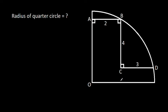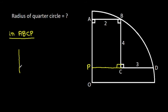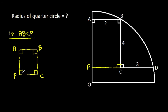If we extend CD, suppose this point is P, then this angle will be 90 degrees. Now, in quadrilateral ABCP, points A, B, C, P — these three angles are 90 degrees. So this angle will also be 90 degrees, meaning ABCP is a rectangle.